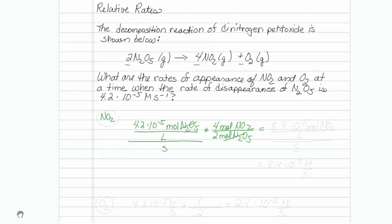So let me punch that in my calculator, and it comes out to be 8.4 times 10 to the minus 5 moles of NO2 per liter of material per second, or just 8.4 times 10 to the minus 5 molar per second. So that's my NO2.